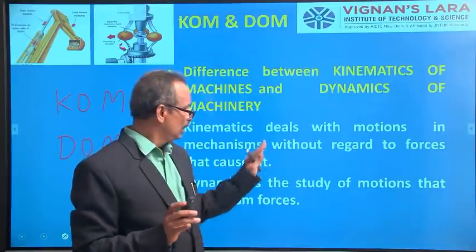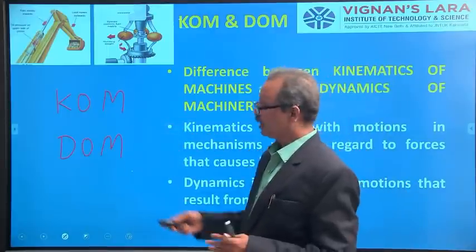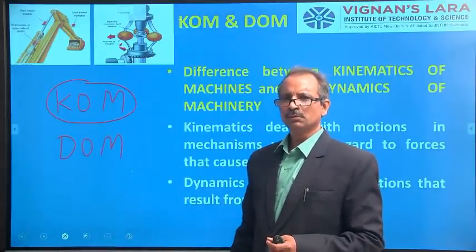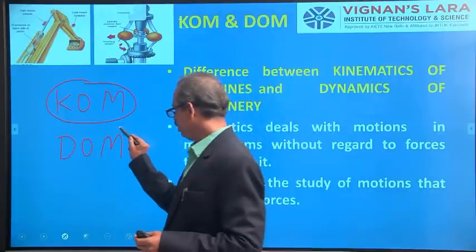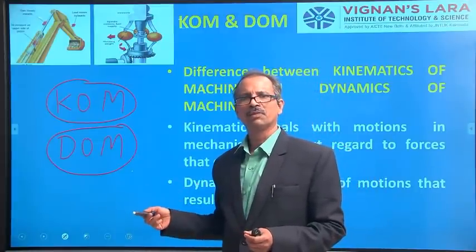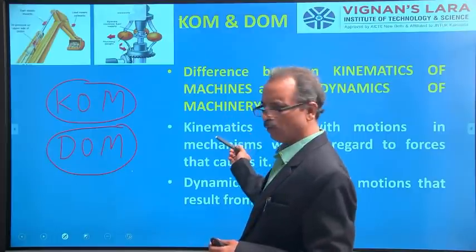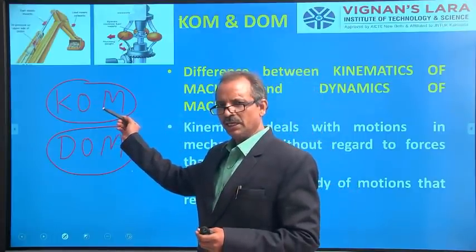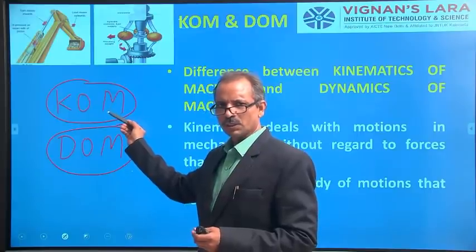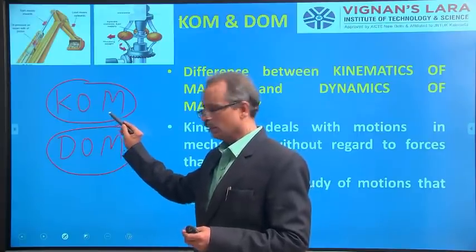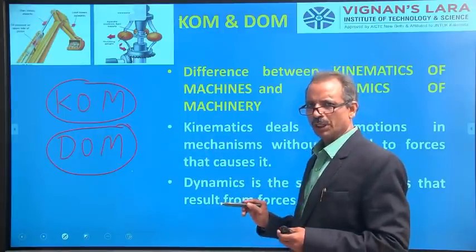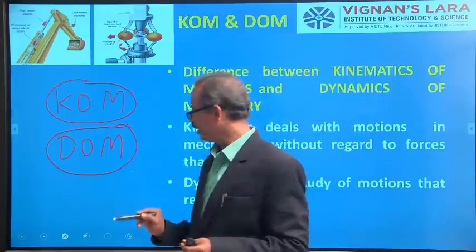This is a simple example. In the KOM course, you are bothering about the displacement in the mechanism. And in DOM also, you are bothered about the displacement, velocity, and accelerations in the mechanism. But in KOM, we are not interested in how that displacement or motion is achieved — with what type of force, and what it is causing. Whereas in DOM, you are bothering about the forces that result in that motion and displacement. That is the basic classical difference between KOM and DOM.